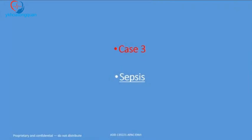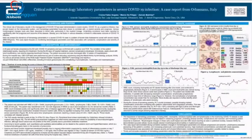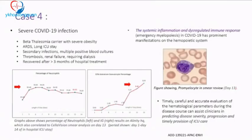Case four is based on a published paper regarding COVID-19. This was a case of severe COVID-19 infection in a patient who was also a beta-thalassemia carrier with severe obesity, making them immunocompromised. The patient was in the ICU for an extremely prolonged period.